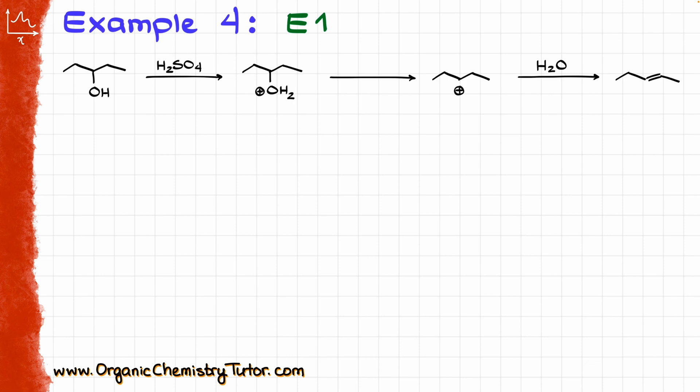My last example is going to be the E1 reaction, which, similarly to SN1, is going to be a multi-step process. In this particular case, I again have step number one, step number two, and step number three, which means we are going to end up with three separate transition states.